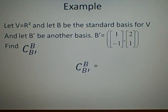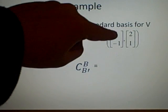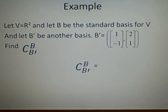Let V equal R² and B be the standard basis for V. So the standard basis for that is going to be [1,0] and [0,1]. And let B prime be another basis: [1,-1] and [2,1]. We've got two vectors in there.